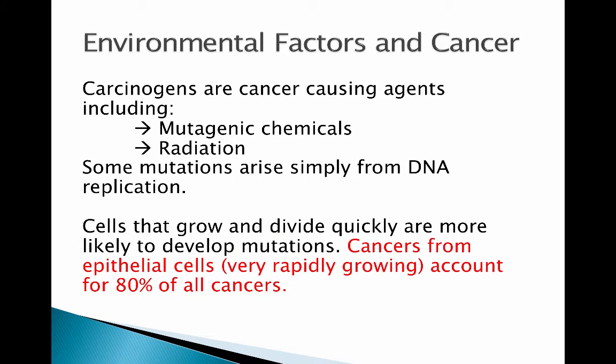Cells that grow and divide quickly are much more likely to develop mutations, because over a lifetime more replications accumulate more errors. About 80% of cancers occur in epithelial cells — not just skin, but also cells surrounding internal organs. This is because epithelial cells are a very rapidly growing cell type, so they accumulate more mutations than slower-growing cells.